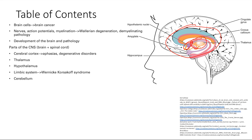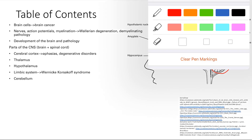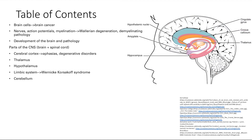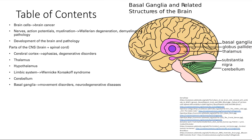Next we're going to look at the cerebellum. This is a movement and gait structure — it helps you coordinate your movement. After that, we're going to look at the basal ganglia, which is also involved in movement. When this gets damaged, you can get diseases like Parkinson's disease.